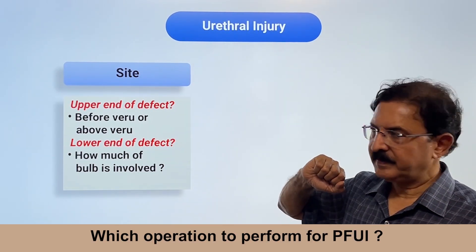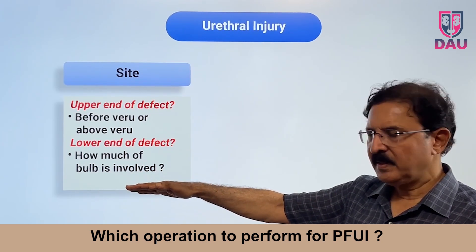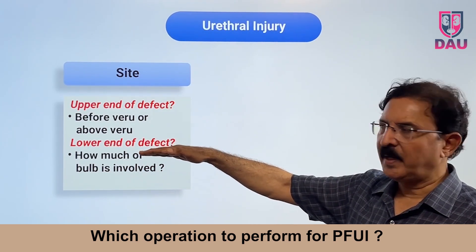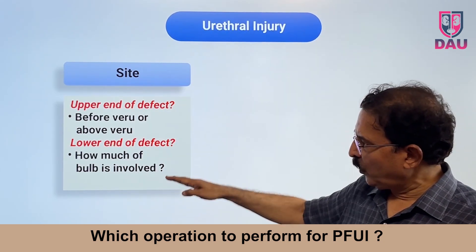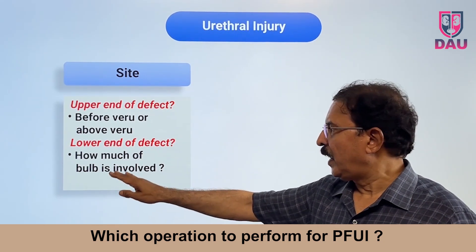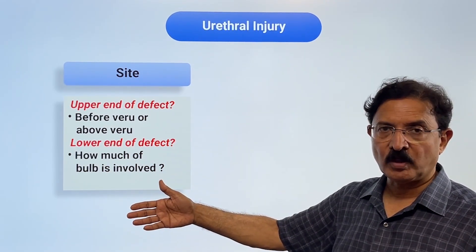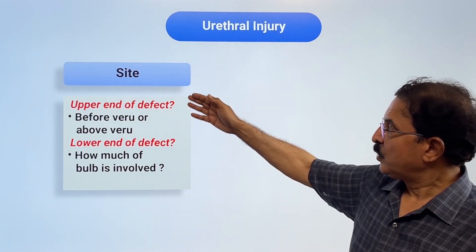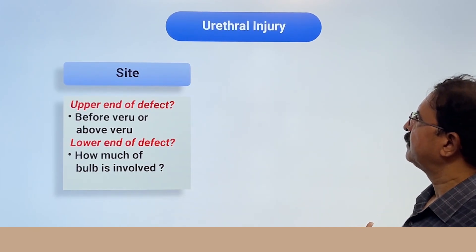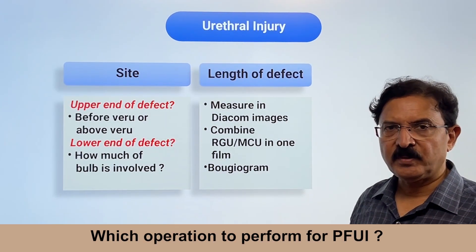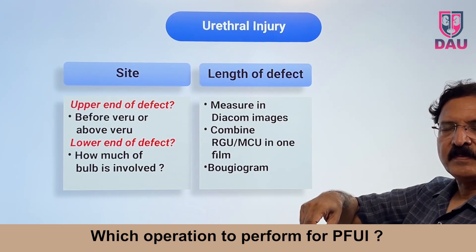This means: what is the upper end of the defect? Is it below the verumontanum, which is the case in most patients, or above the verumontanum? You can know this by looking at the MCU picture. For the lower end of the defect — the bulbar urethra — how much of the bulb is damaged in the trauma process?